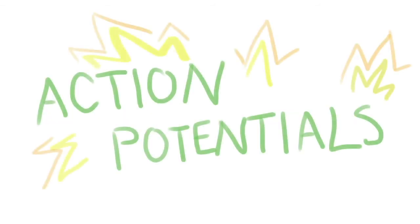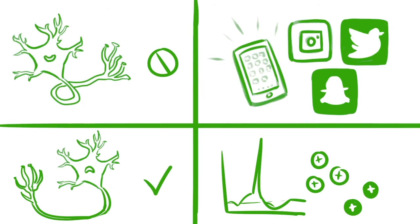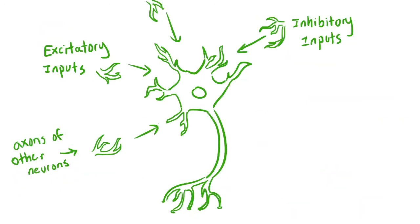Action potential. How do neurons communicate? Neurons communicate through electrical events called action potentials along with chemical neurotransmitters. The generation of action potentials can be either promoted or inhibited by excitatory or inhibitory inputs, which come from the axons of other neurons. But first we need to understand membrane potential.